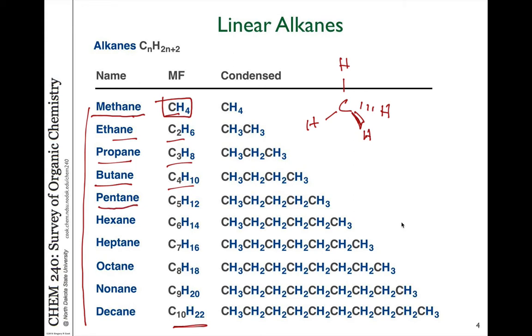Then we go by Greek prefixes which tell us the number: pentane — pent refers to five; hexane — hex is six; heptane — hept is seven; octane — oct is eight; nonane — nine; and decane — that refers to ten.